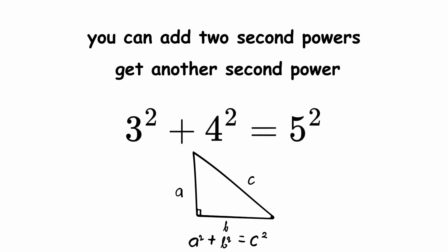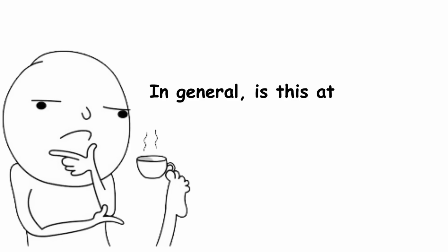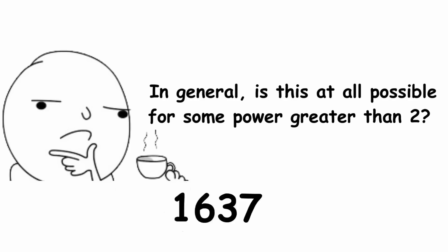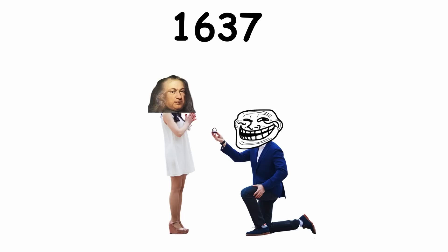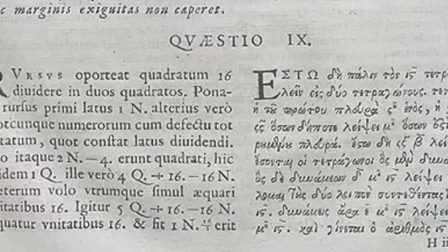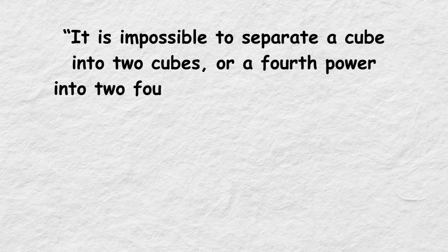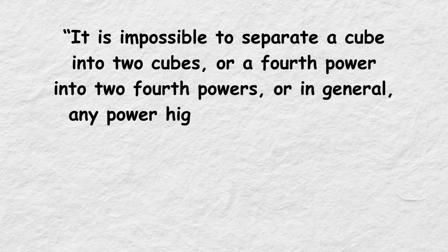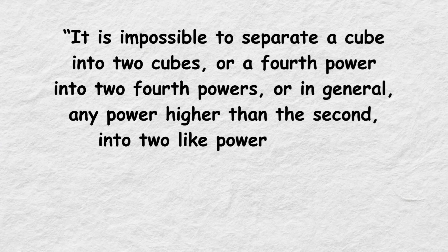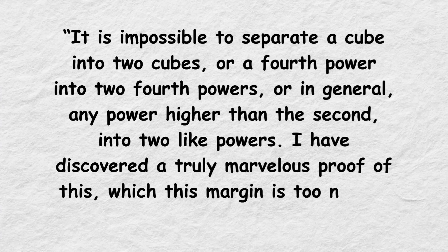But what about adding two third powers and getting another third power? Or fourth powers? In general, is this at all possible for some power greater than 2? In 1637, French mathematician Pierre de Fermat said no. This fact is immortalized in the text he wrote in his copy of Arithmetica: 'It is impossible to separate a cube into two cubes, or a fourth power into two fourth powers, or in general any power higher than the second into two like powers. I have discovered a truly marvelous proof of this, which this margin is too narrow to contain.'